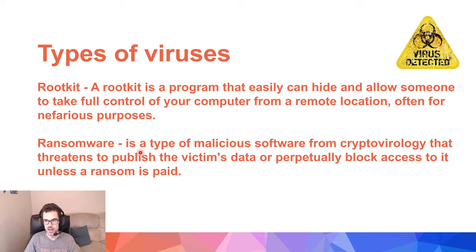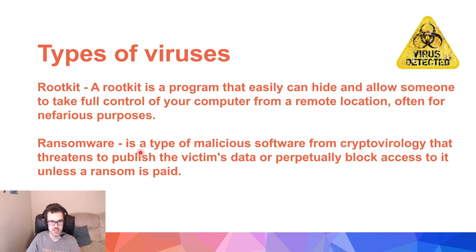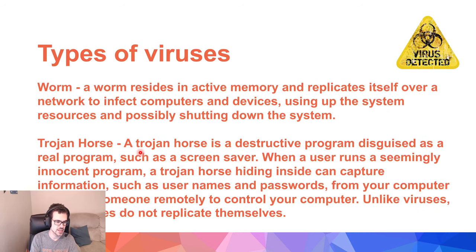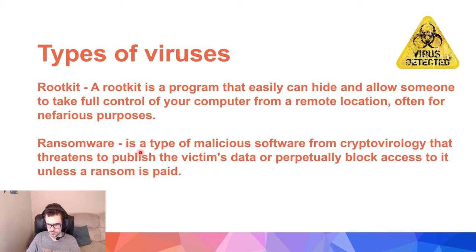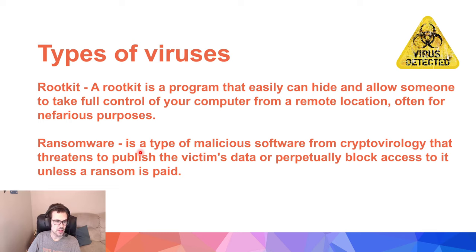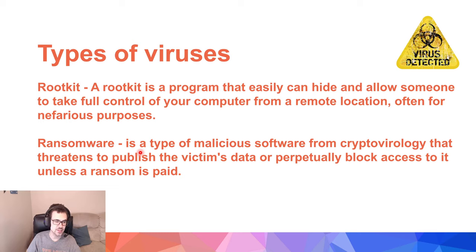A Rootkit is a program that can hide and allow someone to take full control of your computer, often for nefarious purposes — similar idea to the Trojan Horse. Ransomware is a type of malicious software from cryptovirology that threatens to publish the victim's data or permanently block access to the data unless a ransom is paid.